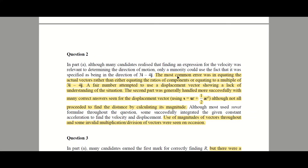In terms of question 2 from the examiner's report, the most common error was equating the velocity vectors directly rather than equating the ratios of components or equating to a multiple of 3i minus 4j. A fair number attempted to use a displacement vector, showing a lack of understanding of the situation. The second part was generally handled more successfully, with many correct displacement vectors found, although not all proceeded to find the distance by calculating its magnitude.